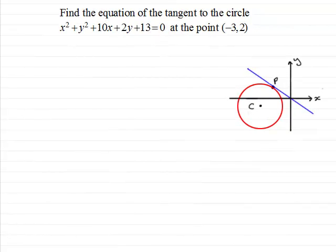Hi. Welcome to this tutorial on finding the equation of a tangent to a given circle. To do this, it's best if we go through an example. So I've got one here. Find the equation of the tangent to the circle x squared plus y squared plus 10x plus 2y plus 13 equals 0 at the point minus 3, 2.